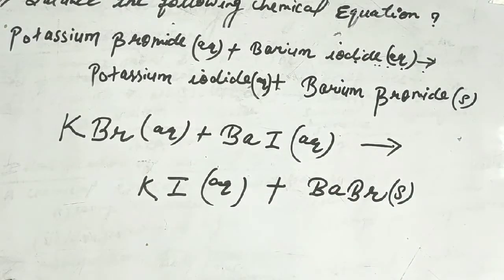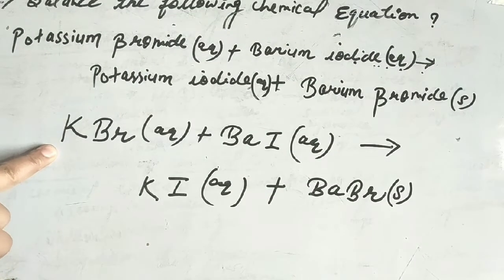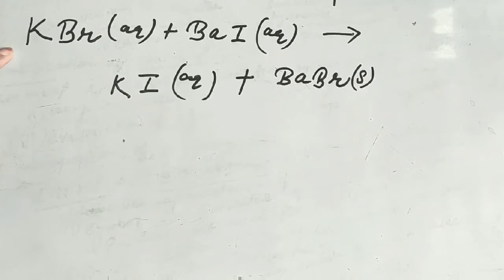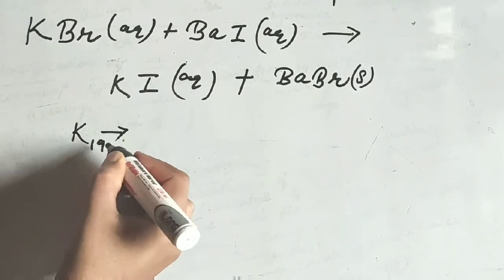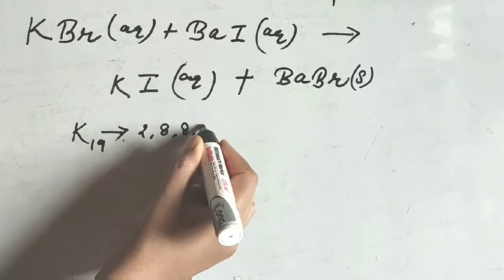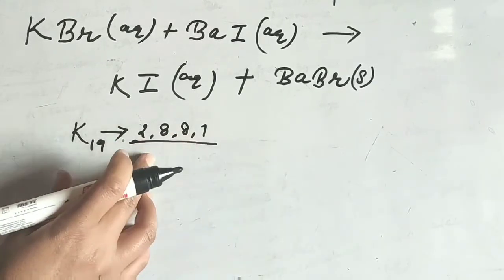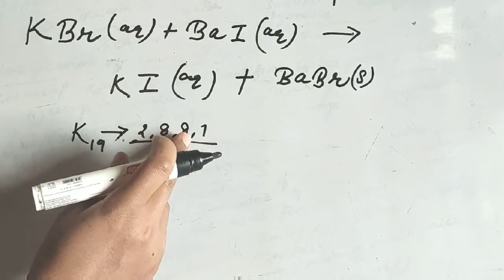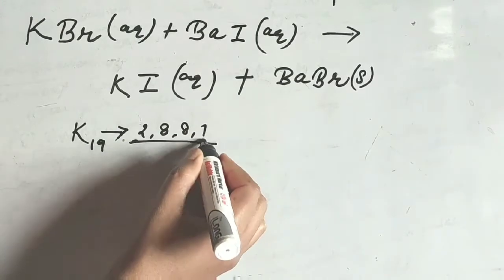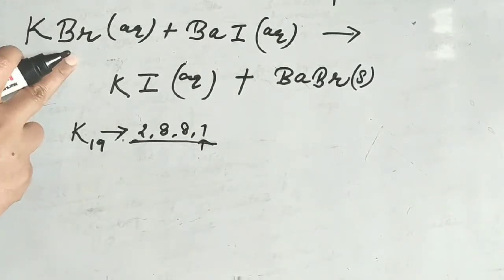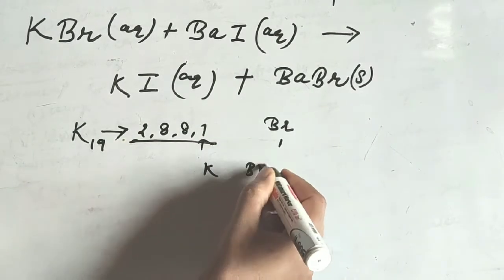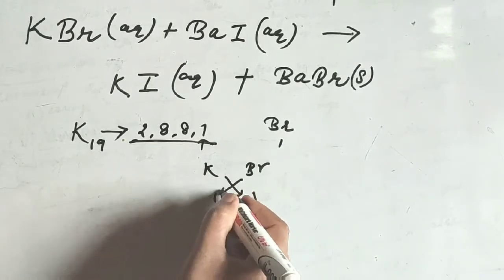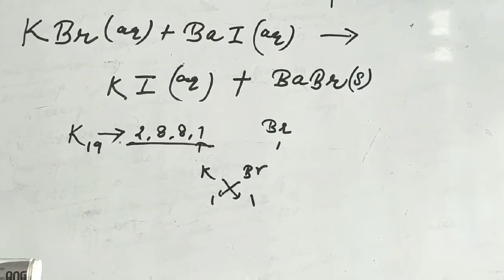First, note that potassium K is balanced. Now, K has valence 1 and Br has valence 1. Using cross multiplication, K and Br both have valence 1, so the formula formed is KBr.